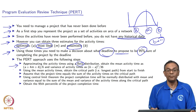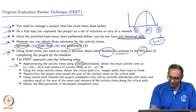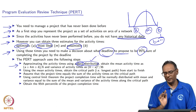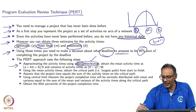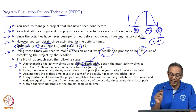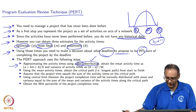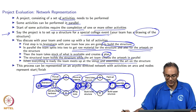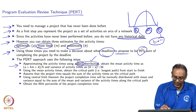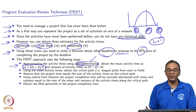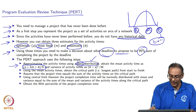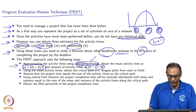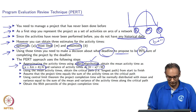The PERT approximation uses five steps. Step 1 says we use the beta distribution for the activity time. The real reason is that given A, M, and B, we can compute the mean and variance of each activity time. The mean is computed as (A + 4M + B) / 6, and the variance as (B − A)² / 36. Once we compute the mean and variance, the beta distribution part is no longer needed.